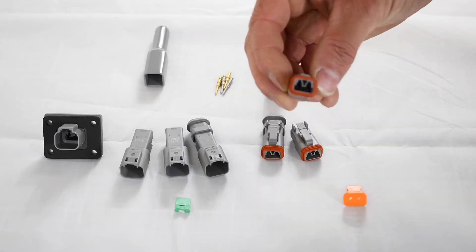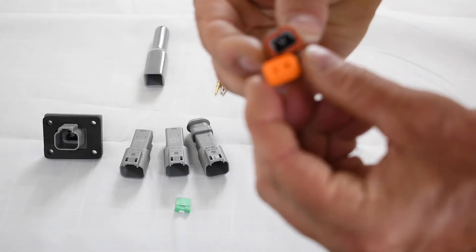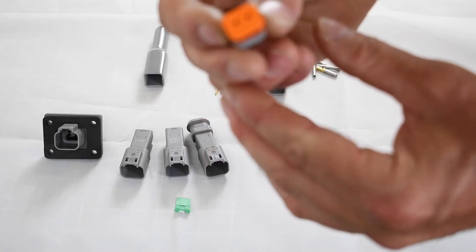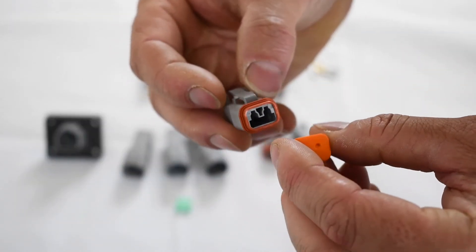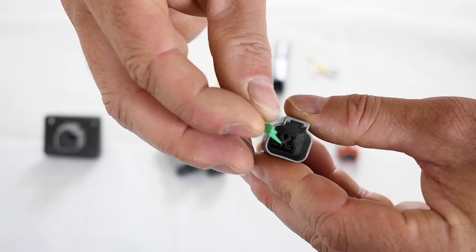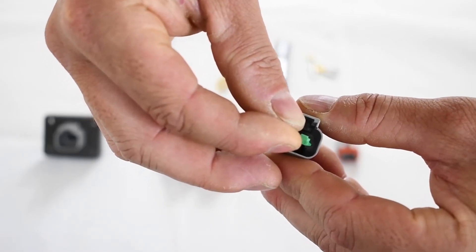So to keep the contacts in alignment, each Deutsch connector requires wedge lock. Just click in there, nice and easy. Click into place. That's on your plug. And on your receptacle, wedge lock gets inserted inside. Keeps the pins in perfect alignment.